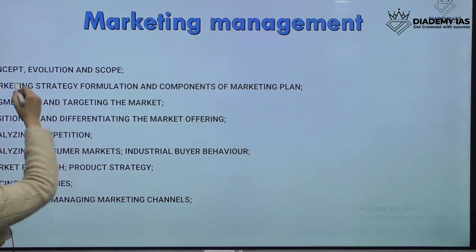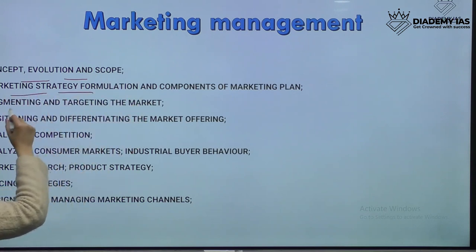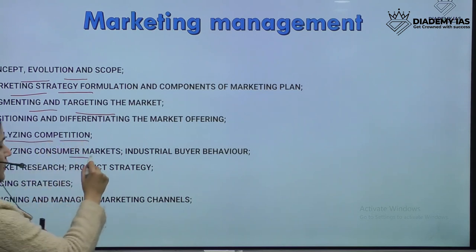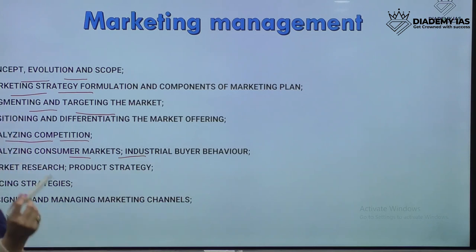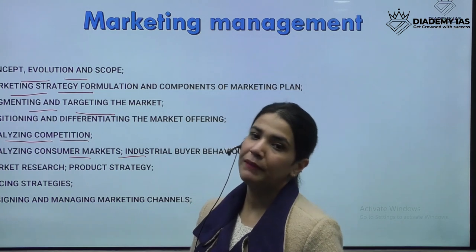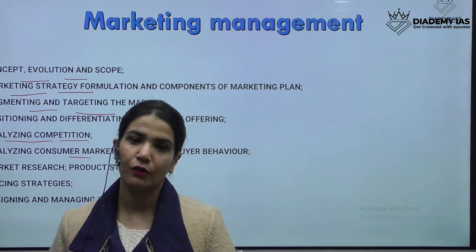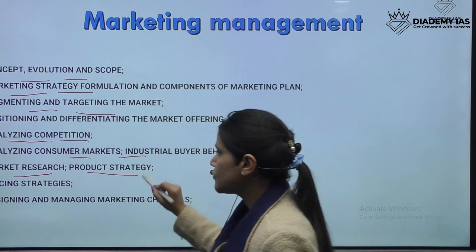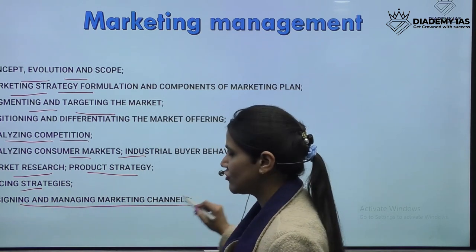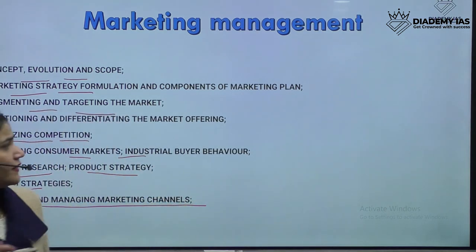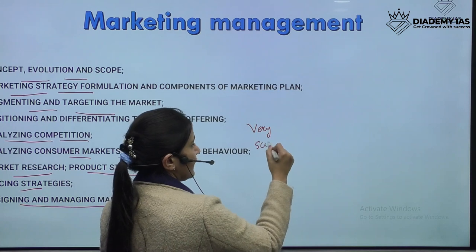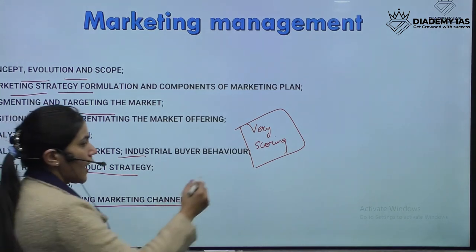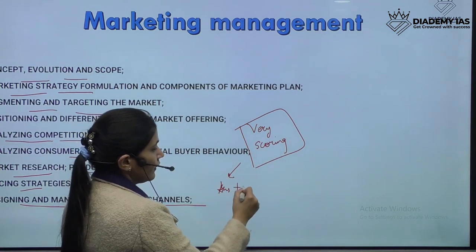The last theoretical subject for Paper 1 is marketing management. It covers the evolution and scope of marketing management, marketing strategies, segmentation, targeting, marketing offer, analyzing competition, consumer markets, industrial buyer behavior. At the end of today's session, I'll also discuss PYQs so you get an idea of the kind of questions asked. Other topics include marketing research, product strategy, pricing strategy, designing and management of marketing channels. This is a very scoring subject — all you need to do is amalgamate your answer with real-life based examples.